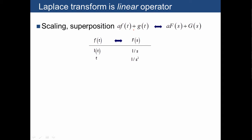Scaling and superposition means that you can add different terms in time, and the transform of those terms is equivalent to the sum of their transforms. For example, if you have two functions of time whose transforms you already know, such as the unit step and the unit ramp, the transform of their sum is simply the sum of the separate transforms: one over s and one over s squared.